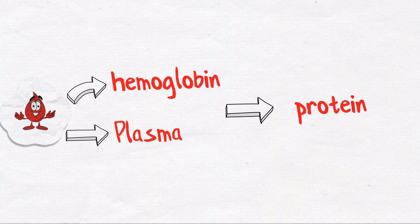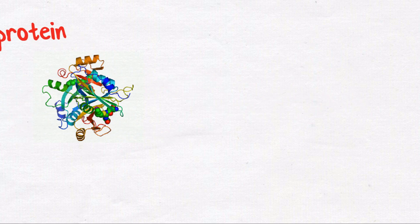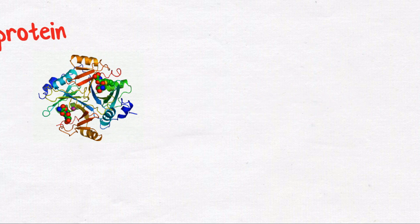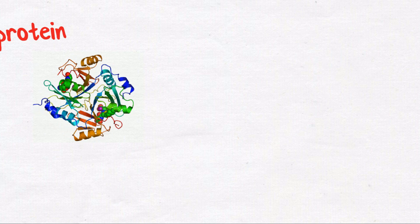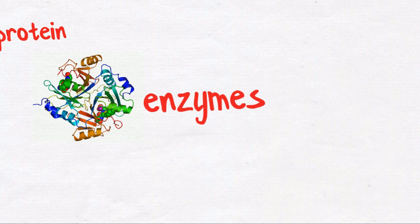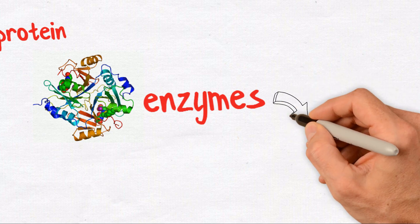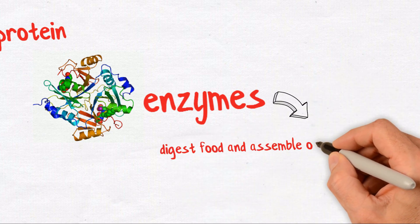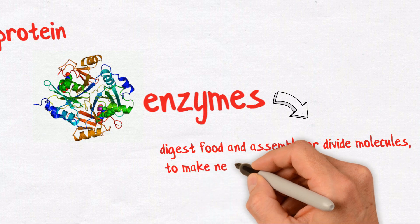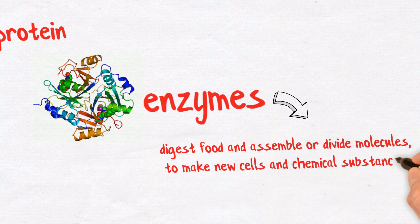About half the dietary protein that you consume each day goes into making enzymes, which are specialized worker proteins that do specific jobs, such as digest food and assemble or divide molecules to make new cells and chemical substances. To perform these functions, enzymes often need specific vitamins and minerals.